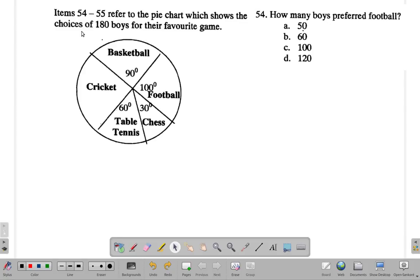Okay, what did you get? So item 54 to 55 refers to the pie chart which shows the choices of 180 boys for their favorite game. How many boys prefer football?